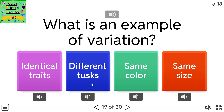What is an example of variation? Options: identical traits, different tusks, same color, same size.